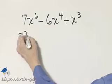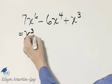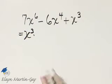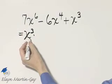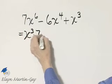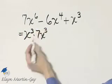Let's rewrite each term so that one factor is x cubed. In other words, 7x to the 6 is x cubed times 7x cubed.